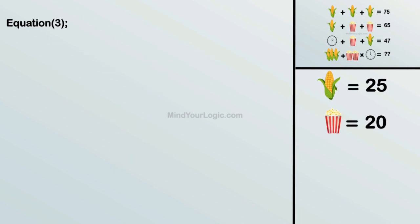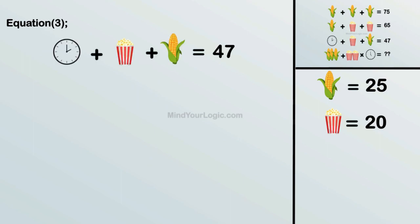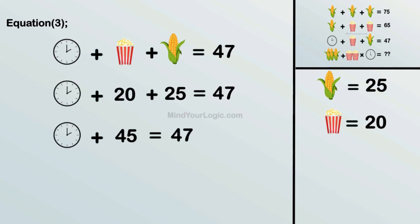Moving to equation 3. Clock plus popcorn plus corn equals 47. Substituting the values, we get clock equals 2.